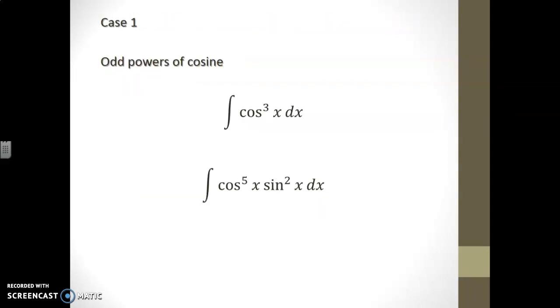Odd powers of cosine can be recognized simply by having a cosine with an odd degree. It can be on its own or combined with a sine function.